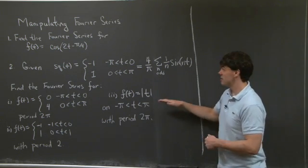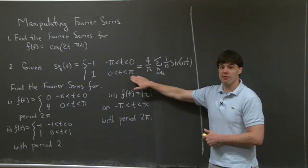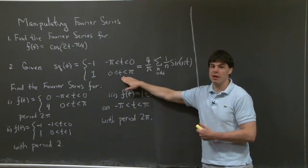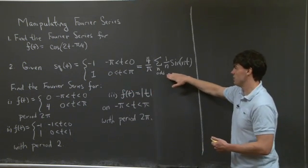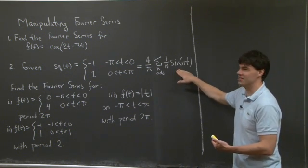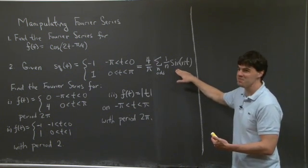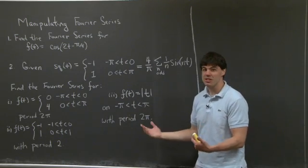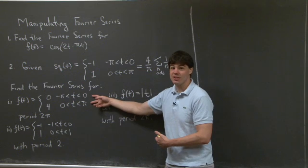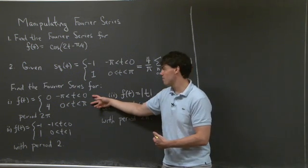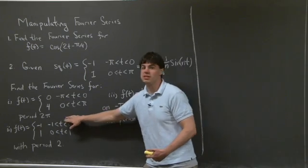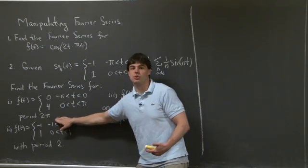And then the second problem is: given a square wave function which takes on the value of minus 1 and 1, and it's 2 pi periodic, we're also told that the square wave function has the Fourier series 4 over pi, times the sum of 1 over n sine nt. The question is to find the Fourier series of three related functions. The first function takes on the value of 0 and 4 on the intervals minus pi to 0 and 0 to pi. Note that this function is also 2 pi periodic.